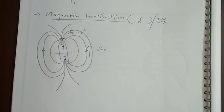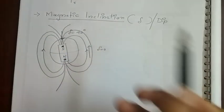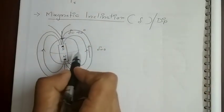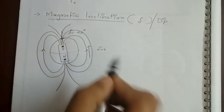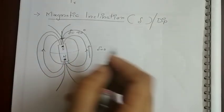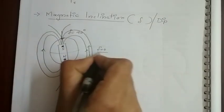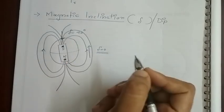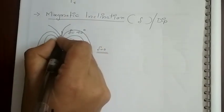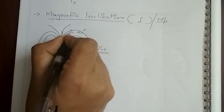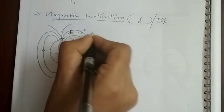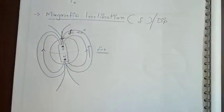You do not have to study this in detail. Just understand that magnetic inclination is used to determine the direction of the earth's magnetic field, and at the equator its value delta is equal to zero, and at the poles the value of magnetic inclination delta is equal to 90 degrees.